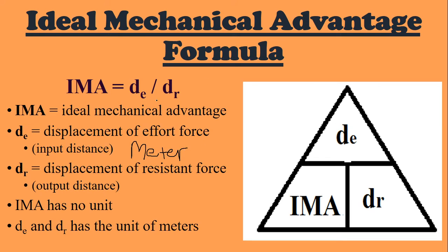If you place it in the formula, because DE is being divided by DR, we place it in the triangle: DE at the top, DR at the bottom, IMA in the empty spot. If you haven't watched any of these videos, you need to know that numbers on top of each other divide, and numbers next to each other multiply.